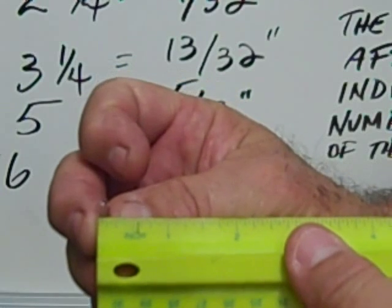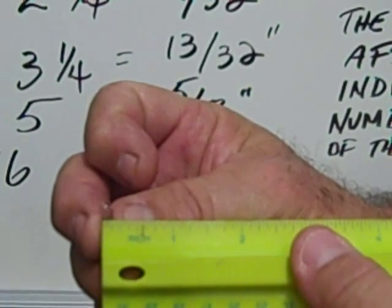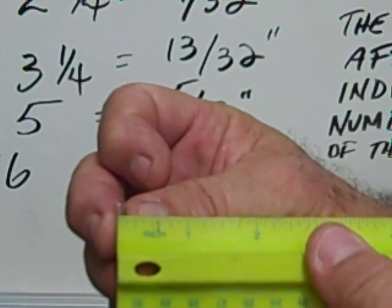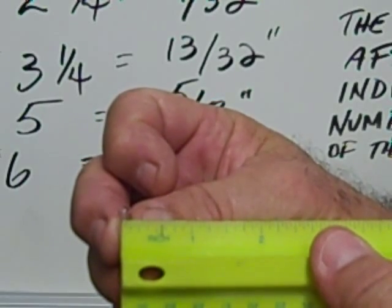If I place this at the beginning of the ruler, you can see that this is a T one and a half. Now that's equivalent to three sixteenths of an inch.